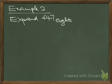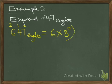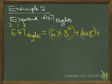Let's look at expanding 647 base 8. The value position of 7 is 0, this is 1, this is 2. Therefore 647 base 8 equals 6 times 8 to the power 2, plus 4 times 8 to the power 1, plus 7 times 8 to the power 0. We are not expressing further.